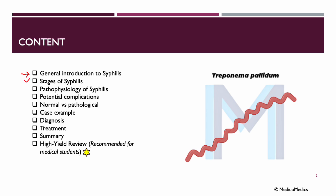We will talk about stages, pathophysiology, and potential complications. We will then compare normal versus pathological, present a case example, discuss diagnoses and treatment, and end with a summary. Remember to check our high-yield review, especially for medical students.